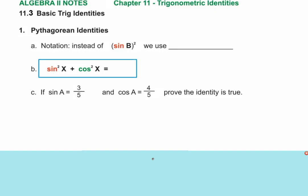First off, let's make sure that we understand notation. If you had something like sine b squared — that means sine b times sine b. Mathematicians love to save pen strokes, so someone figured out a cute way: instead of putting the squared outside using parentheses, they put it right after the trig function. It means exactly the same thing — it just saves you two parentheses.